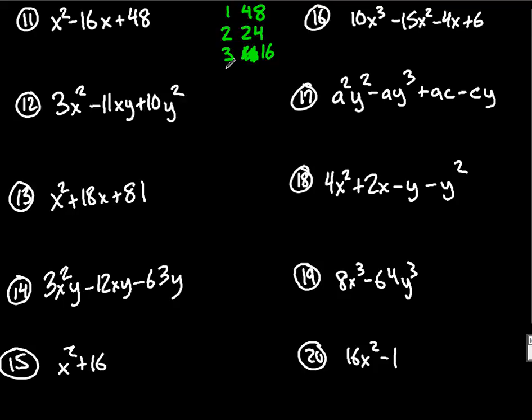Yeah, 3 and 16, 4 and 12, 6 and 8. Those are all the factors. Which one of those add to 16? That would be 4 and 12.